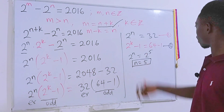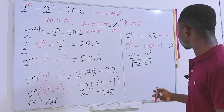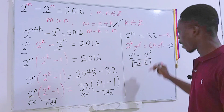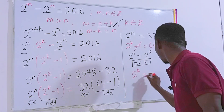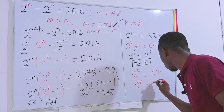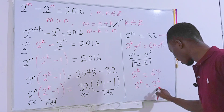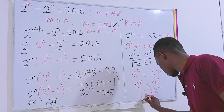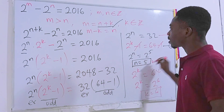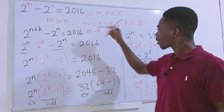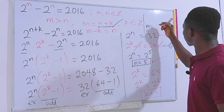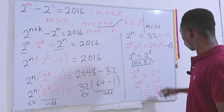From the second equation: 2 to the power k minus 1 equals 63. The minus 1 terms cancel, giving 2 to the power k equals 64. We rewrite 64 as 2 to the power 6, so the bases are the same, and therefore k equals 6.